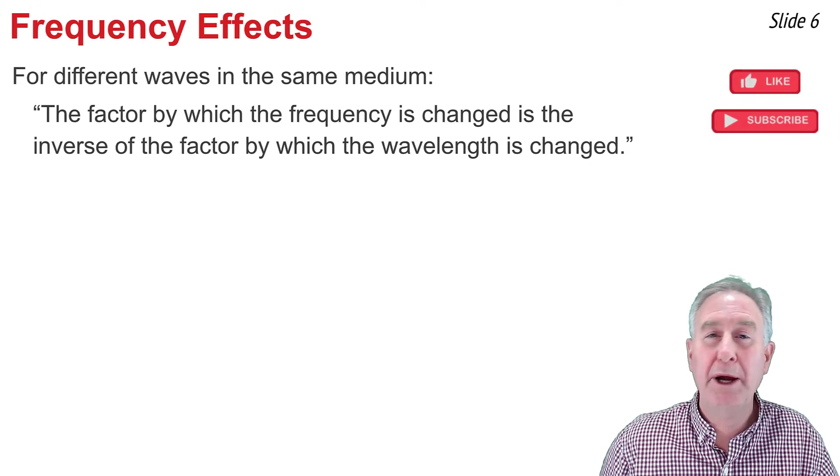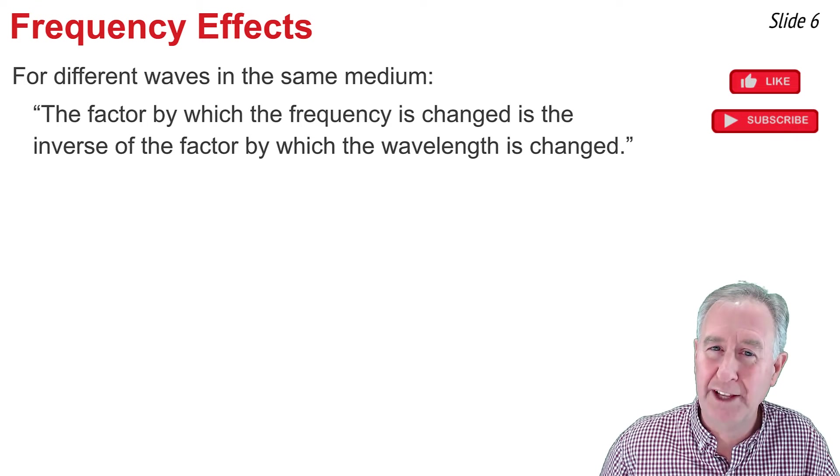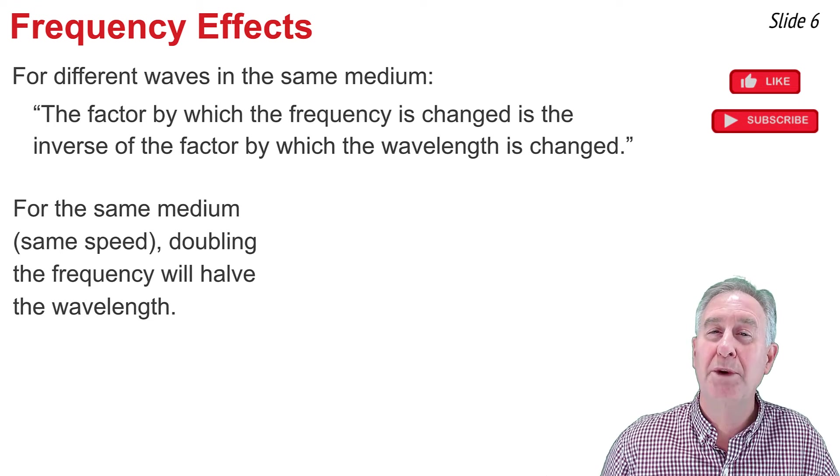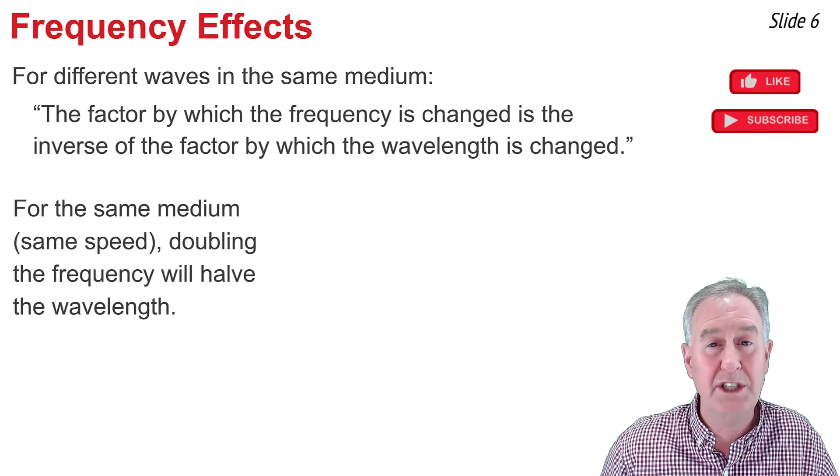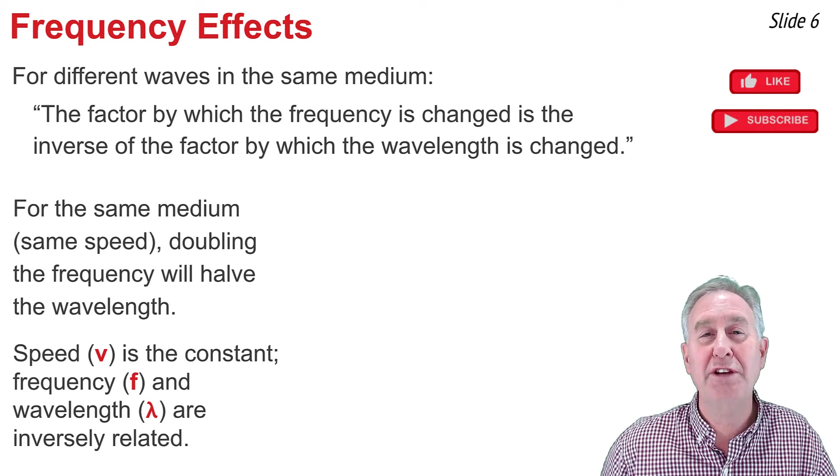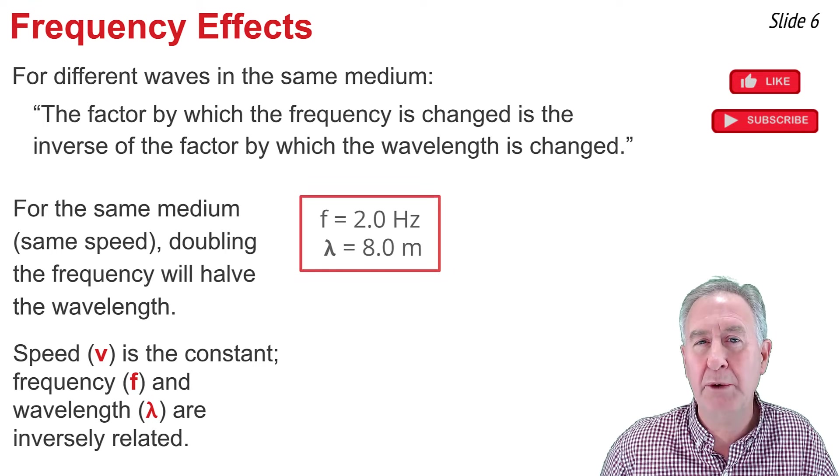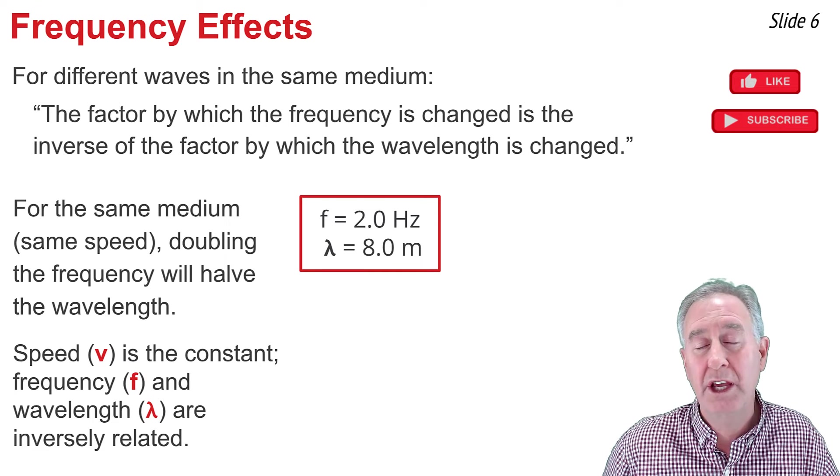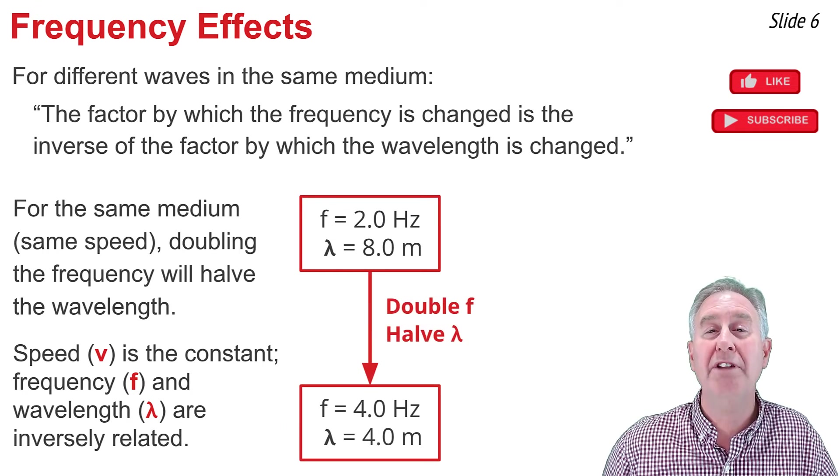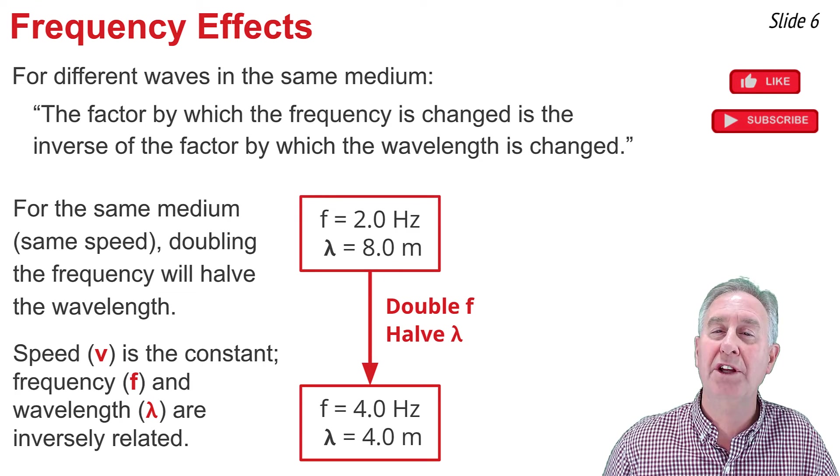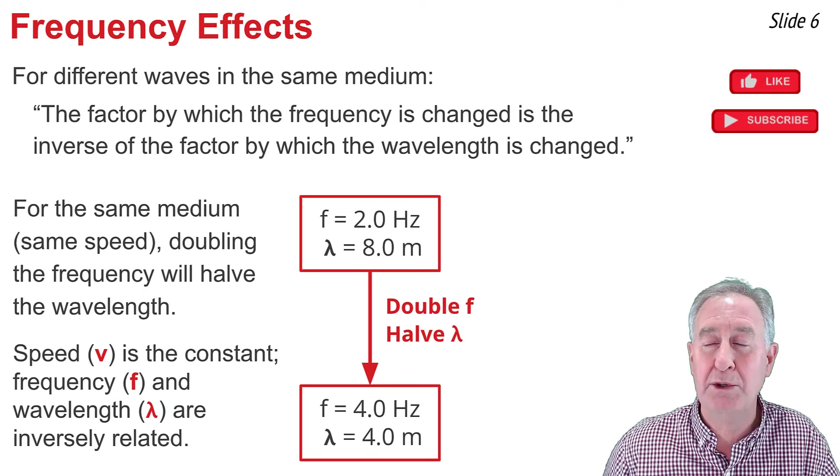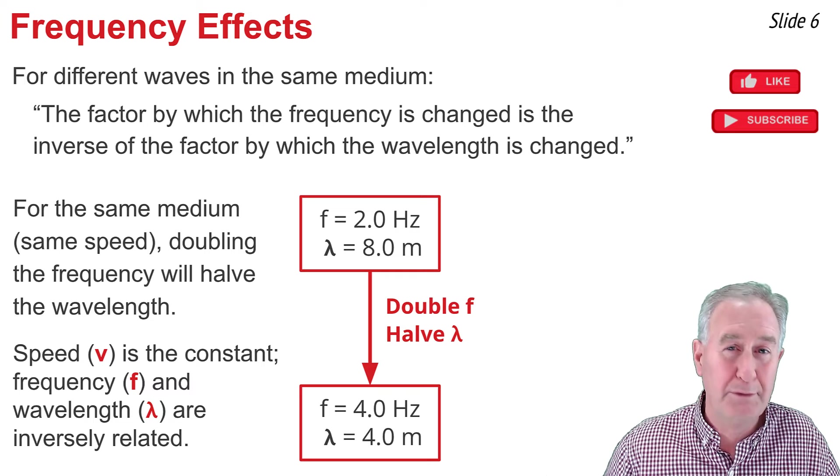We just saw in the previous data table that the factor by which the frequency is changed is the inverse of the factor by which the wavelength is changed. In other words, for two waves in the same medium, we notice that doubling the frequency would cause the wavelength to be halved. We could think of the equation v equal f lambda. When applied to waves in the same medium, the v is the constant in the equation, and the f and the lambda are the variables that change, and they change inversely to one another. To illustrate, let's suppose that we had a wave whose frequency was 2 hertz and whose wavelength was 8 meters. Using the equation, the speed of such a wave would be 16 meters per second. But if we doubled the frequency to 4 hertz, the wavelength would halve from 8 to 4 meters, and we can now calculate a new speed as 4 times 4, and it comes out to be 16 meters per second, illustrating that the v is the constant at 16 meters per second. In both of these cases, the wavelength got halved when the frequency got doubled.